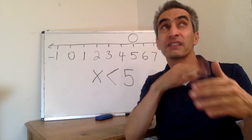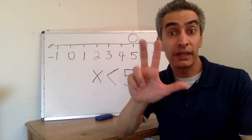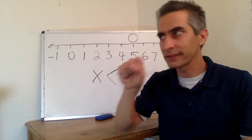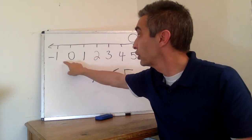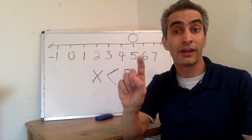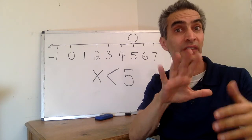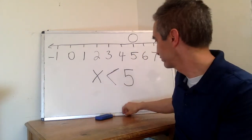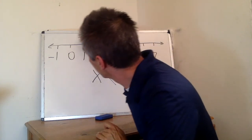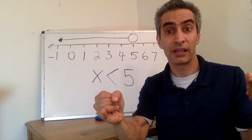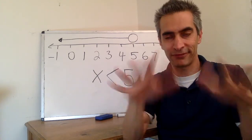Is four less than five? Yes. Is three less than five? Yes. Are two, one, zero, negative one, and continuing on into much smaller numbers all less than five? Yes. Now the number line shows all numbers less than five, and we're done.